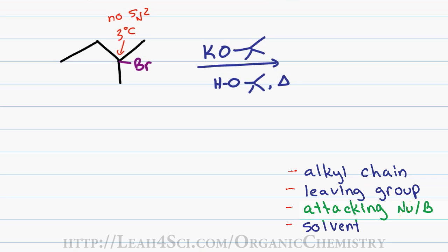Next, we'll look at the attacking nucleophile/base. We see something that appears neutral, but remember potassium is simply a positive spectator to balance the negative charge on the oxygen. The fact that it's negative means it's too strong and impatient to wait for a carbocation to form, so we rule out the one-type reactions. This leaves me with an SN2 or E2 reaction.